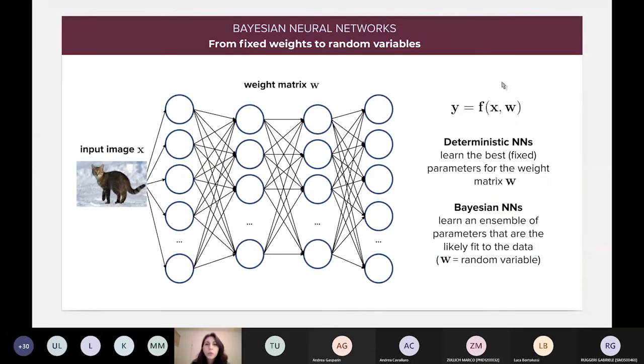So, what you will do in a classical deterministic neural network is to learn the best fixed parameters for the weight matrix. So, this means that each one of the weights in this matrix W is a random variable and we want to learn the distribution of these random variables.